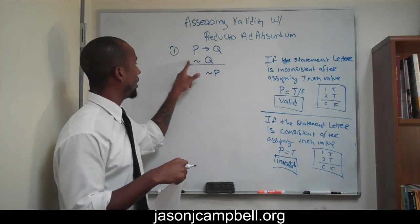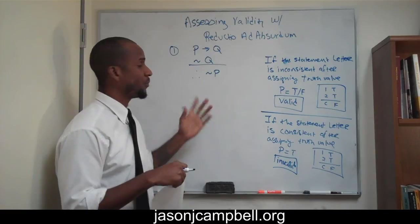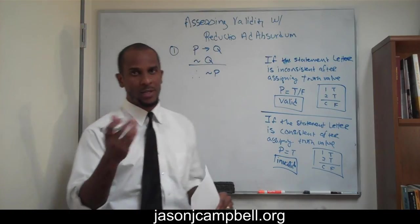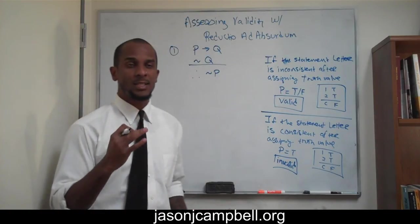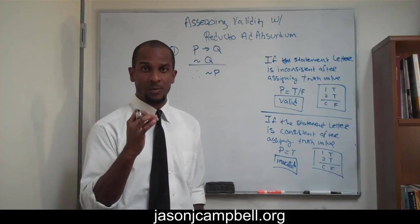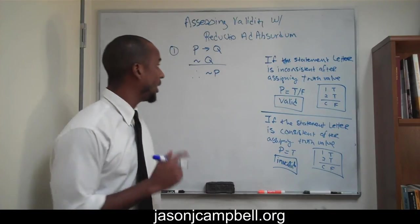If P, then Q, not Q, therefore not P. And we want to assess the validity. Some of you already know, but we want to assess the validity of this argument using reductio ad absurdum. That part you might not know. How do we do this?